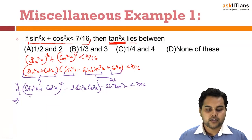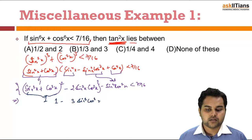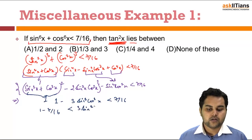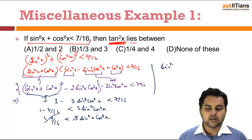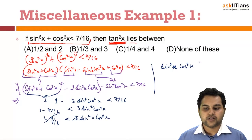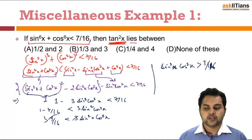The first bracket again comes out to be 1. So I get 1 - 3sin²x·cos²x < 7/16, or equivalently 1 - 7/16 < 3sin²x·cos²x. That gives 9/16 < 3sin²x·cos²x, or sin²x·cos²x > 3/16.